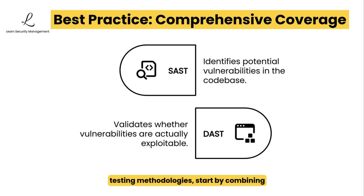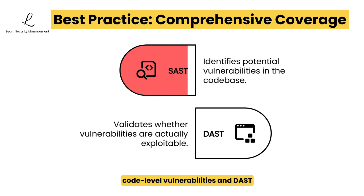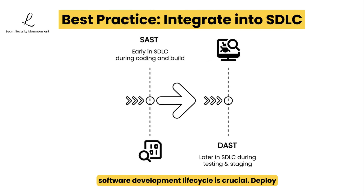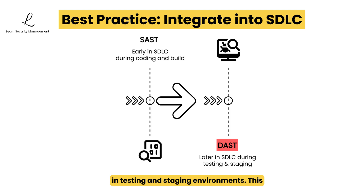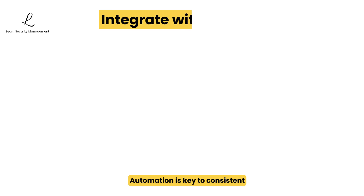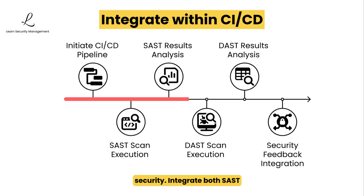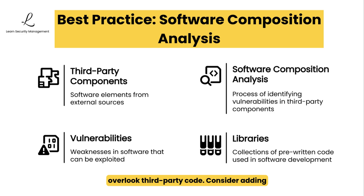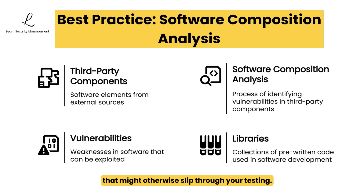To implement these testing methodologies effectively, start by combining SAST and DAST for comprehensive coverage — using SAST to identify potential code-level vulnerabilities and DAST to validate which ones are actually exploitable in practice. Proper integration into the software development lifecycle is crucial: deploy SAST early during coding and build phases, while scheduling DAST later in testing and staging environments. Automation is key to consistent security — integrate both SAST and DAST scans within your CI/CD pipeline to provide continuous security feedback with each code change, making security an ongoing process rather than a one-time event. Don't overlook third-party code: consider adding software composition analysis to identify vulnerabilities in external components and libraries that might otherwise slip through your testing.